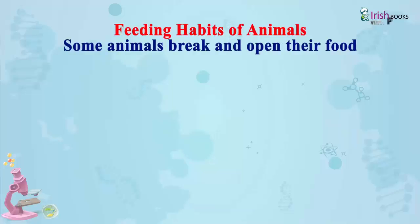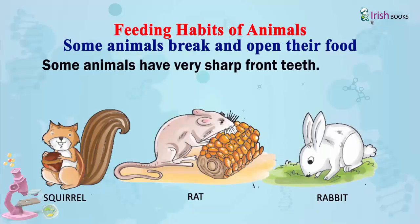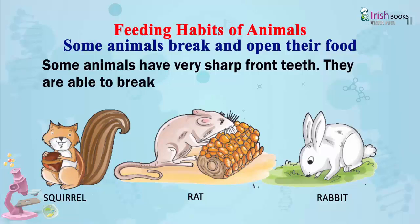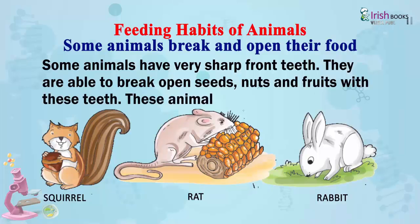Some animals break open their food. Some animals have very sharp front teeth. They are able to break open seeds, nuts, and other hard foods with these teeth. These animals gnaw their food.